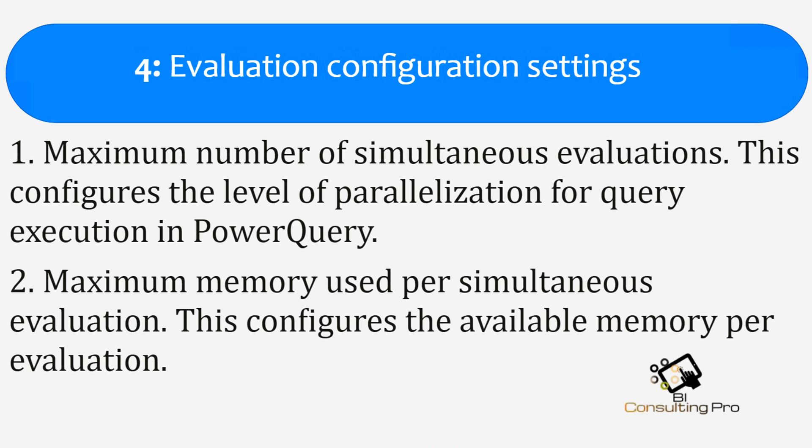Until now you could only influence these settings by making changes to the registry. But now Microsoft has added two configuration options in Power BI Desktop. Number one: Maximum Number of Simultaneous Evaluations — this configures the level of parallelism for query executions in Power Query. Number two: Maximum Memory Used Per Simultaneous Evaluation — this configures the available memory per evaluation. By using these settings you can make sure the loading of data is optimized for your machine.